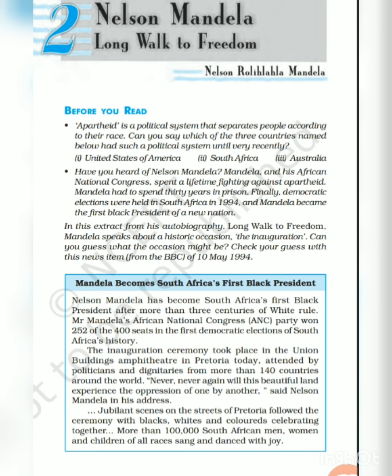In ancient times the society was divided into four classes: the upper class were the Brahmins, the second were Kshatriyas, the third were Vaishyas, and the fourth class was Shudras. People belonging to the lower caste were treated as slaves and were said to be born to serve the upper class.